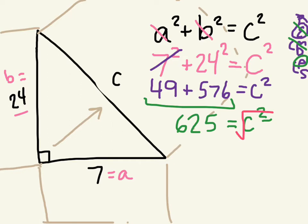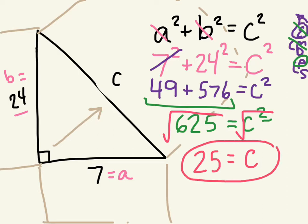And that cancels the square out, so I find the square root of each side. I have to do the same thing to both sides. This canceled the two out, so I'm left with C. And in my calculator, I find the square root of 625, and it is 25.